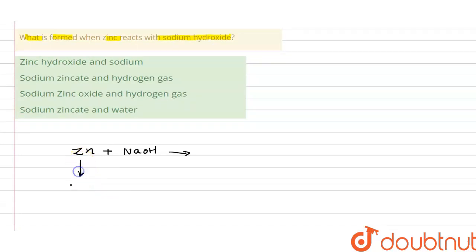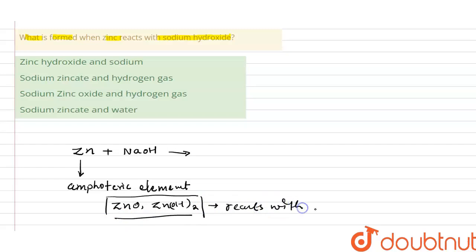What is the meaning of amphoteric element? So their oxide is ZnO and their hydroxide that means Zn(OH)2. Their oxide and hydroxides react with both acid as well as base. Can react with acid and base with both. So that is the amphoteric element.